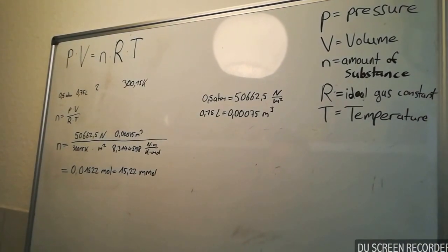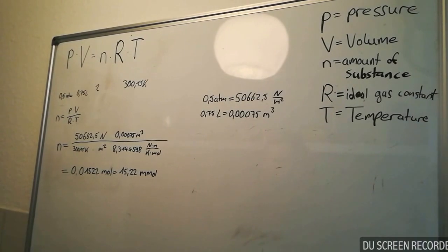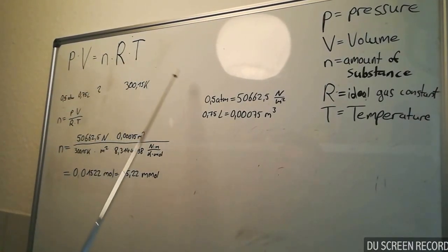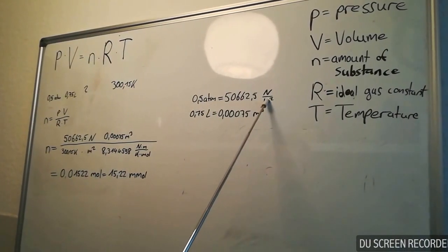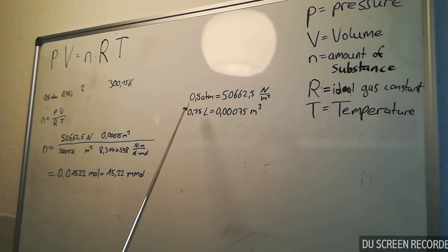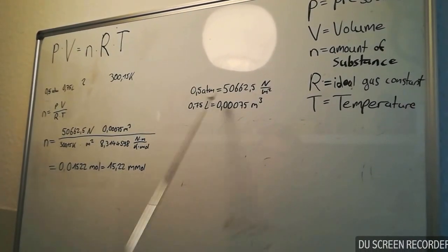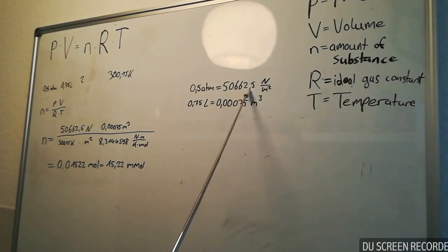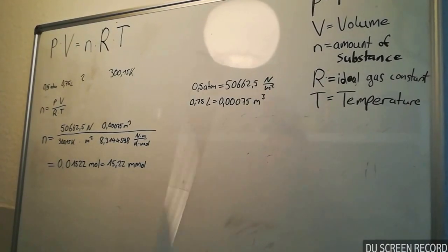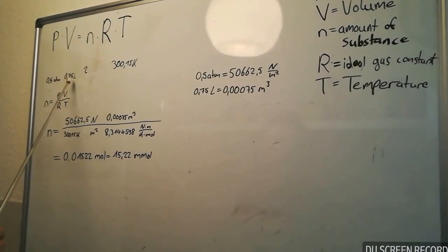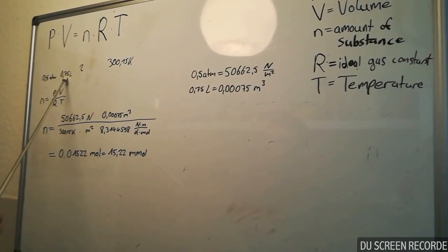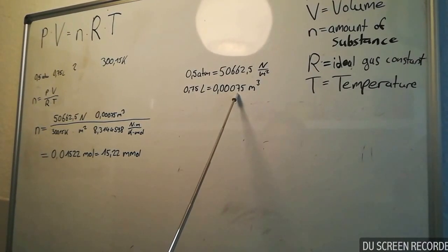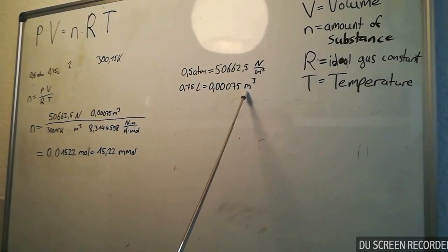From our first calculation, we know that to transfer atm to newton per square meter, 1.5 atm's are equal to 50,662.5 newton per square meter. And the 0.75 liters are equal to 0.00075 cubic meter.